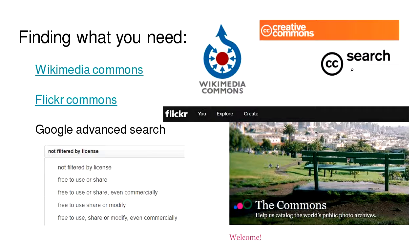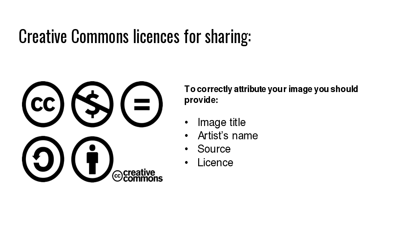We're going to talk a little bit later about how you attribute an image. If you've found an image you wish to use that is Creative Commons, you need to know exactly what you can do with it and follow the instructions of the license in order to use it fairly. Generally, I would use a license that's Creative Commons BY, because if it's BY, we just have to attribute the image back to the person that created it, and you'll see in the coming slides just what that looks like.